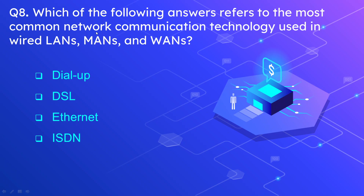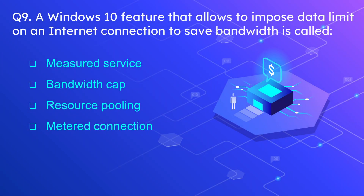Question number 8: which of the following answers refers to the most common network communication technology used in wired LANs, MANs, and WANs? MAN stands for metropolitan area network, WAN is wide area network, and LAN is local area network. The options are dial-up, DSL, Ethernet, and ISDN. The correct answer is Ethernet. Ethernet is the protocol most commonly used over LAN, MAN, and WAN networks.